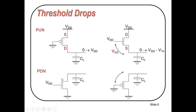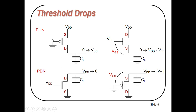Similarly, in the pull-down network we use N-MOS transistors. When we use an N-MOS transistor in the pull-down network, it will easily discharge the output capacitor from VDD to 0. If we use a P-MOS transistor in the pull-down network, it will only discharge the output capacitor from VDD to VDD minus VTP — so VTP will still remain. That's why we use N-MOS transistors in the pull-down network only. In the pull-up network always use P-MOS transistors, and in the pull-down network always use N-MOS transistors.